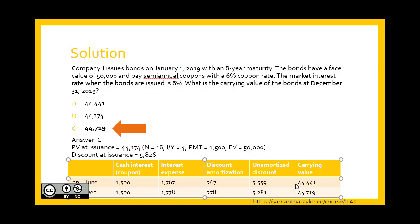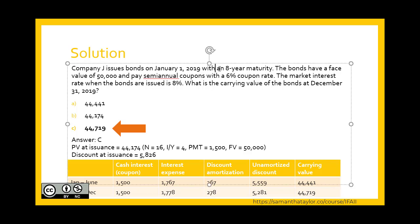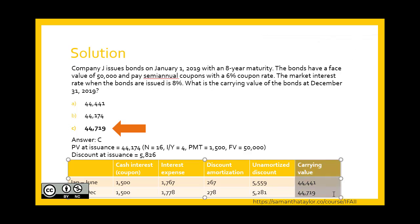You can see each period this carrying value gets bigger and bigger. At the end of the eight years, it will equal $50,000, which is what we'll have to pay to settle the bond. That is the end of this video. We'll see you in the next one.